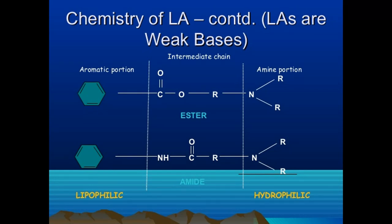The chemistry of local anesthetics shows an intermediate chain to which an amine portion and an aromatic portion are attached. The aromatic portion is lipophilic and the amine portion is hydrophilic. A change in the intermediate chain - ester or amide linkage - produces two types of local anesthetics: esters and amides. Classification is based on this intermediate chain.